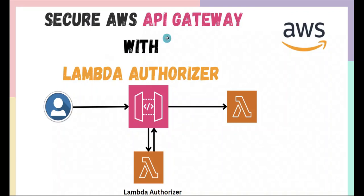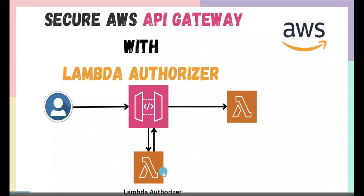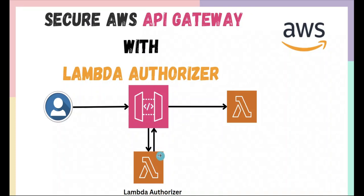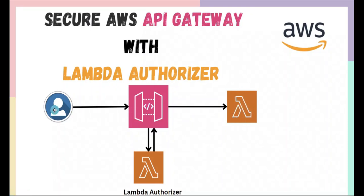In this video we're going to see how to secure API Gateway with a Lambda Authorizer. Let's say we have a REST API running with Lambda as the backend. We're going to create a simple REST API with Lambda as a backend service and secure it with a Lambda Authorizer. Whenever a user tries to access this API, API Gateway will forward the request to the authorizer first, which checks the authentication token, and only if authentication is successful will the request be forwarded to the backend service.